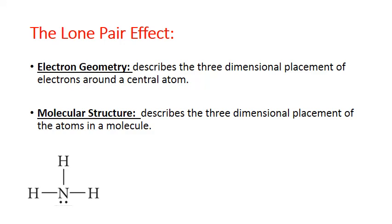Another important consideration in VSEPR theory is that the electron geometries predicted by the electron groups are not necessarily the same as the molecular structure, particularly when there are lone pair electrons on the central atom. Electron geometry describes the three-dimensional placement of all electrons around a central atom — it doesn't matter whether those electrons are in bonds or lone pairs. Molecular structure, on the other hand, describes the placement of outer atoms around a central atom.